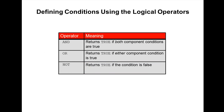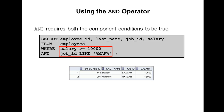Now let's look at the logical operators in Oracle. There are three logical operators: AND, OR, and NOT. AND returns true if both component conditions are true. OR returns true if either of the component conditions is true. NOT returns true if the condition is false.